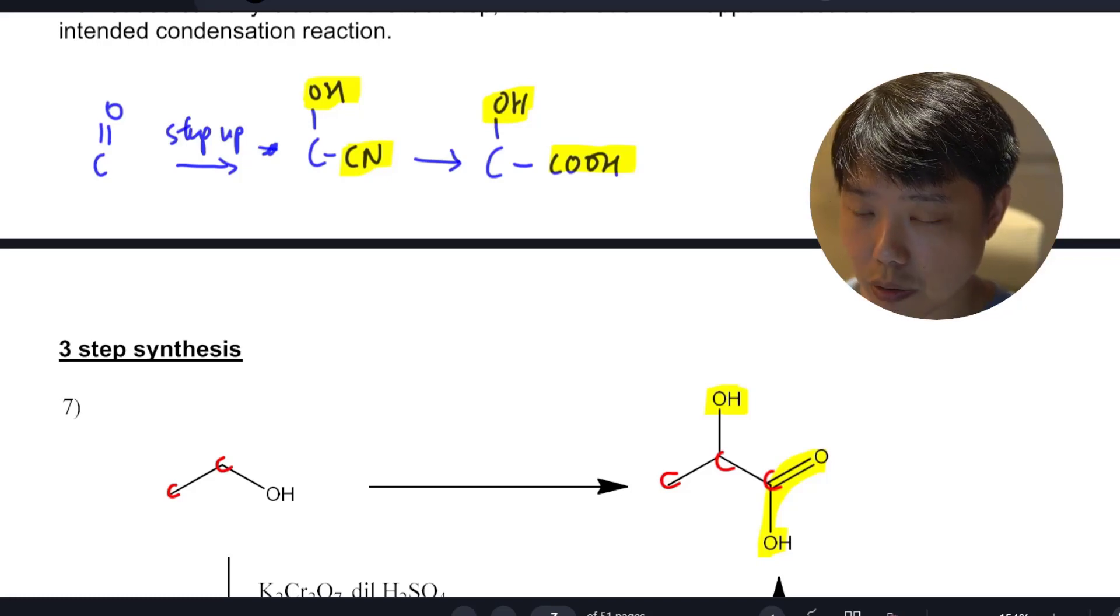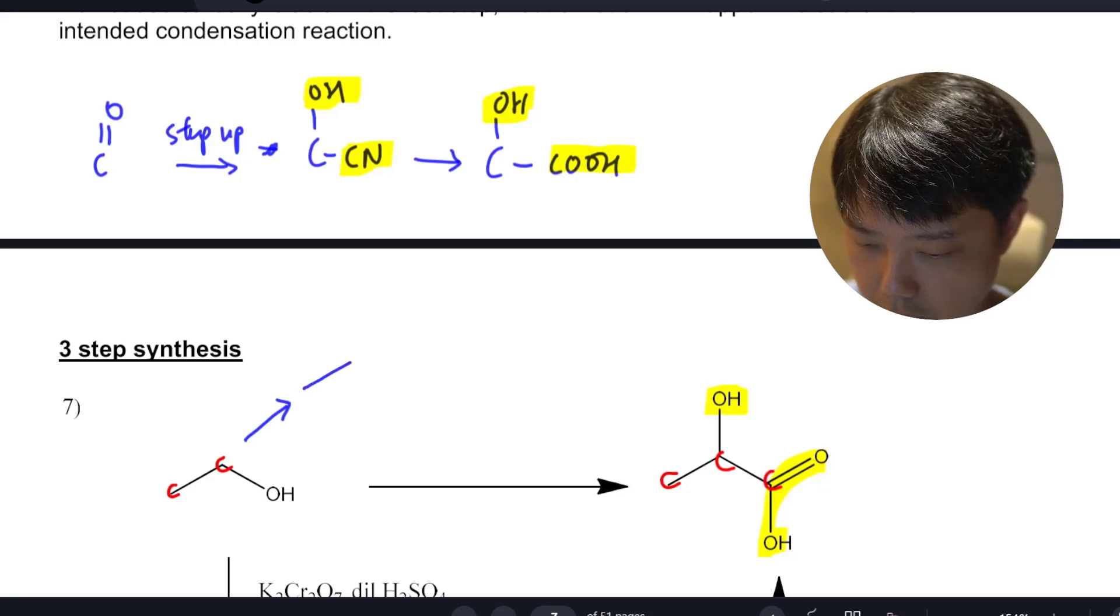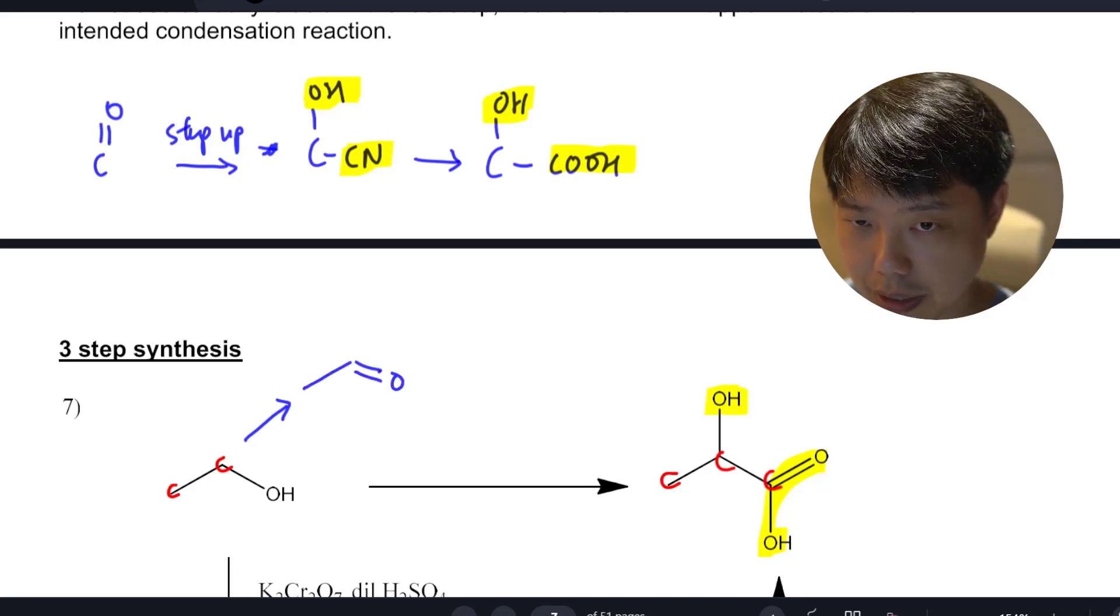So what we want to do is get it to the carbonyl. We want to get the alcohol to become carbonyl. So we can actually do a mild oxidation so that it becomes carbonyl.